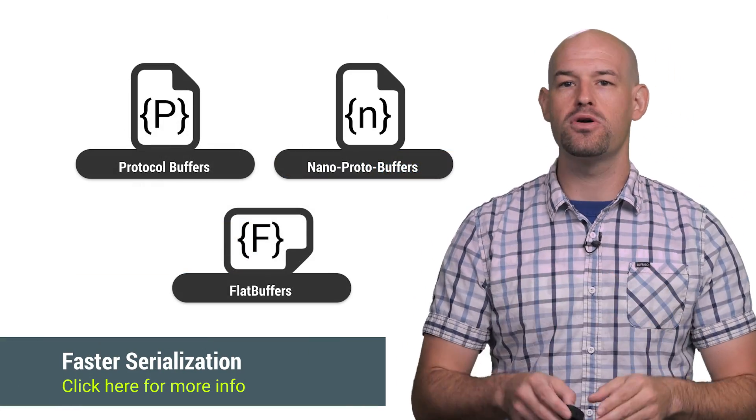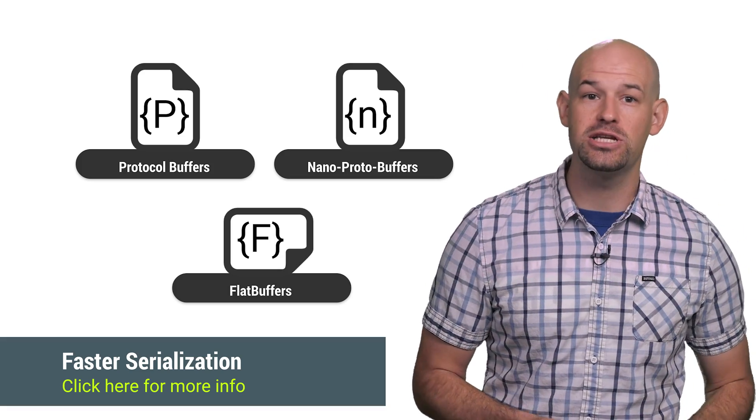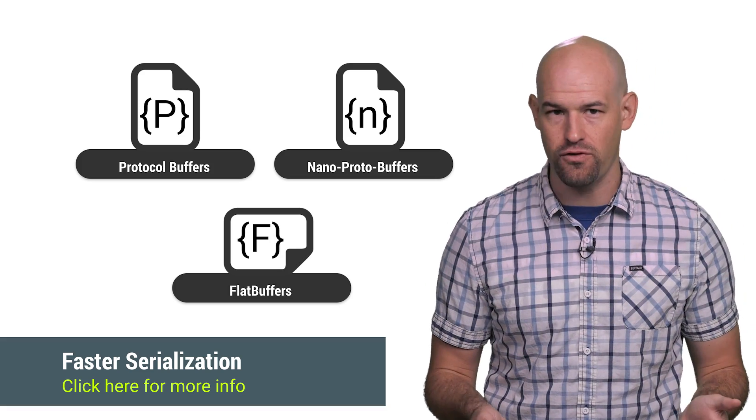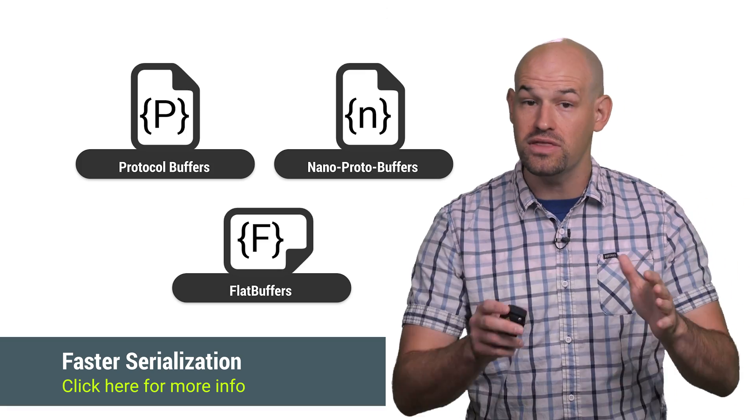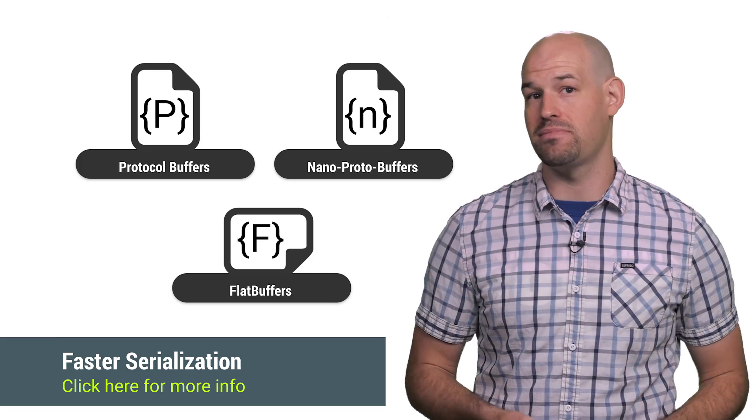Now, it's worth pointing out that once you've transposed your data, you can get even better compression and faster serialization by adopting binary serialization formats like protobufs, nanobufs, or flatbuffers. These formats produce much smaller files than JSON or XML counterparts.